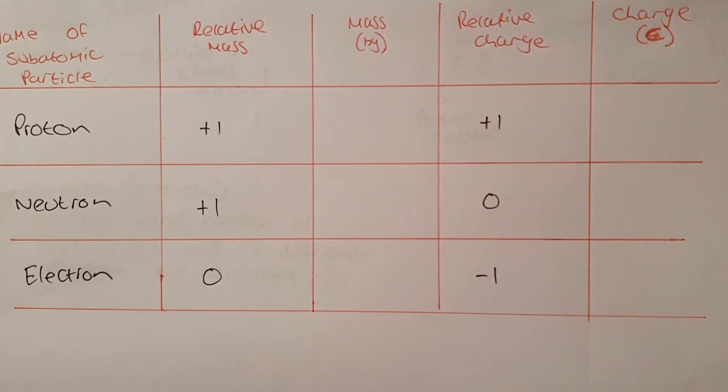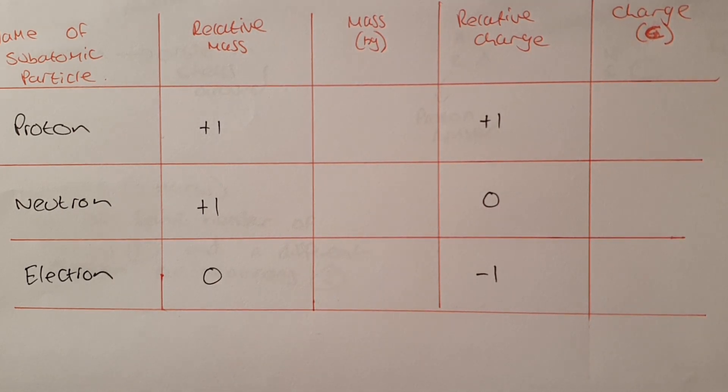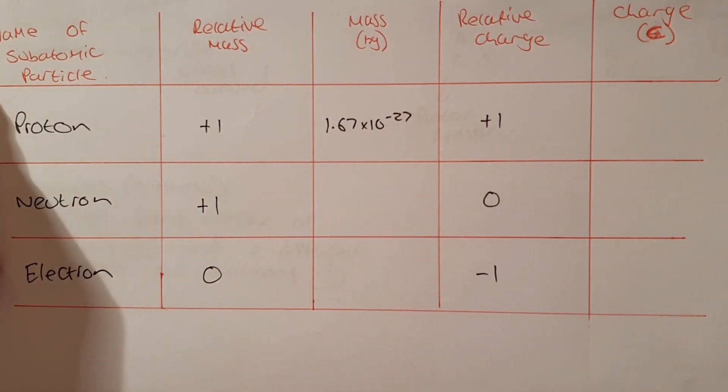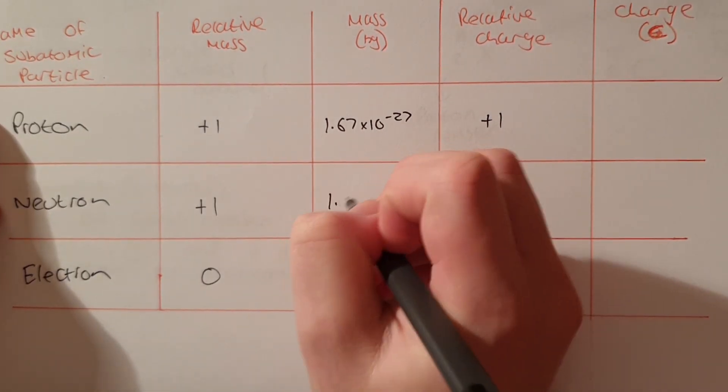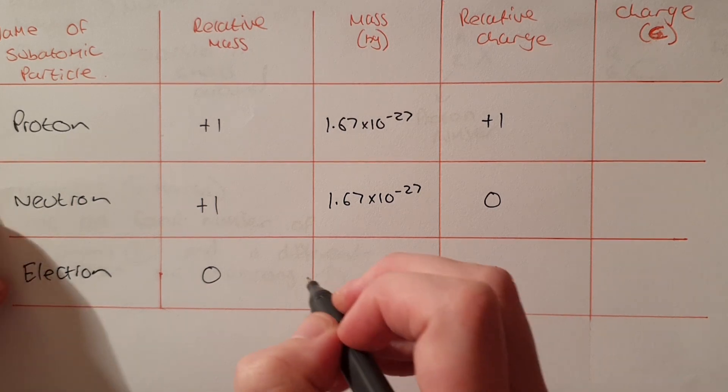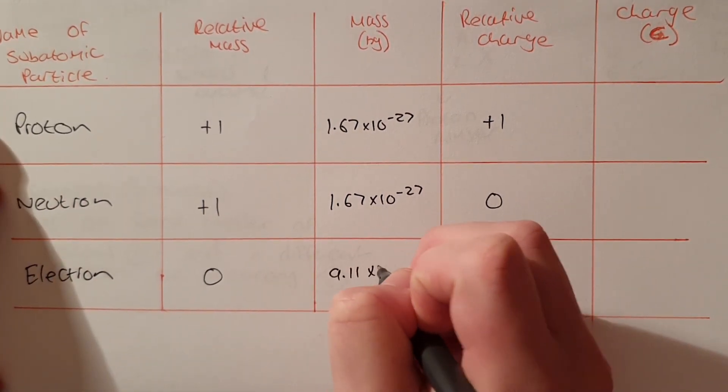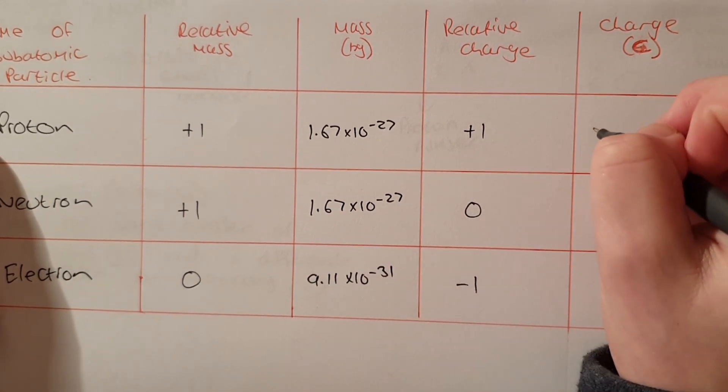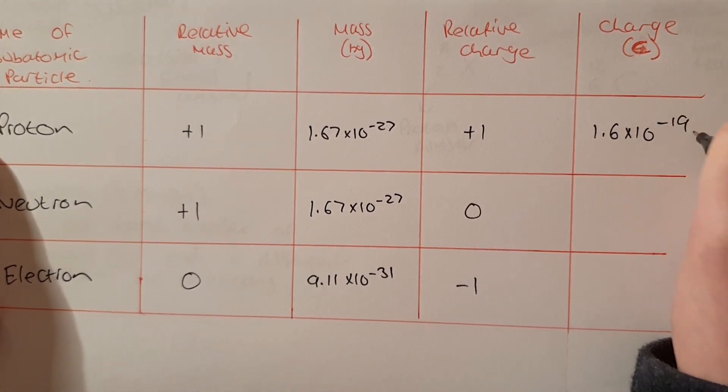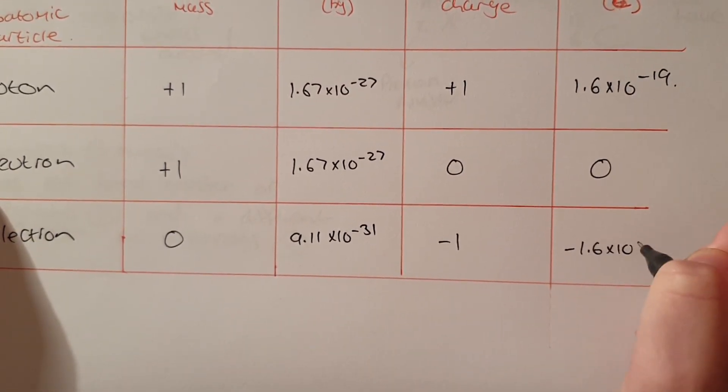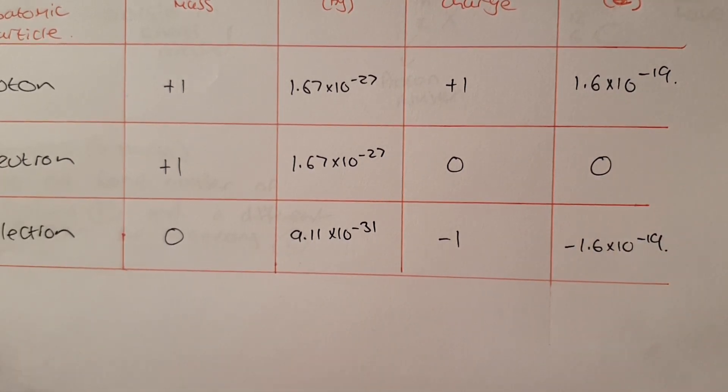However at A level we have to take mass and charge in SI units. We have to know specific numbers. The mass of a proton is actually 1.67 times 10 to the minus 27 kilograms to three significant figures. A neutron to three significant figures is also 1.67 times 10 to the minus 27. An electron is actually 9.11 times 10 to the minus 31 kilograms. Likewise with charge they all have specific numbers. Protons have a charge of 1.6 times 10 to the minus 19 coulombs. A neutron is still zero and an electron is minus 1.6 times 10 to the minus 19. Pay attention positive negative that is still the same.